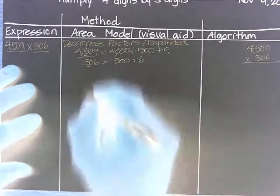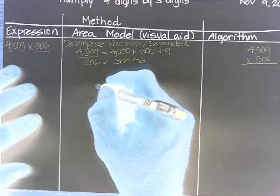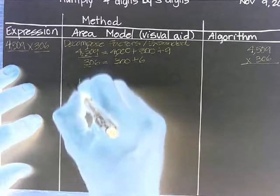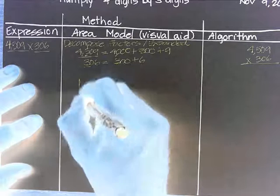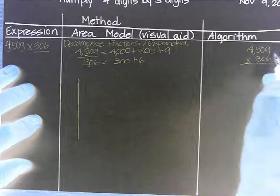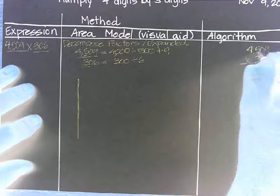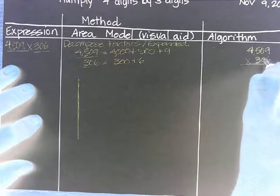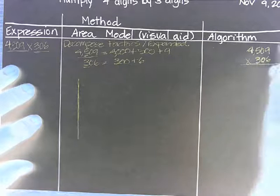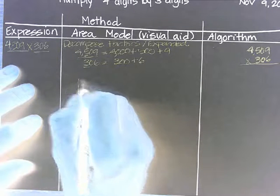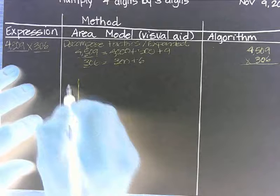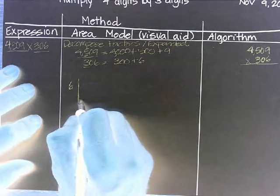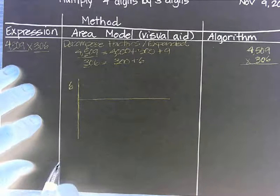So here's what the area model does. So let's rewrite the number. So we rewrite like this, 4,509 multiplied by 306. So if the number has been multiplied, then we write down the numbers on the left side. So we have 6, 1. And that will be part of the area. And the other one is 300.